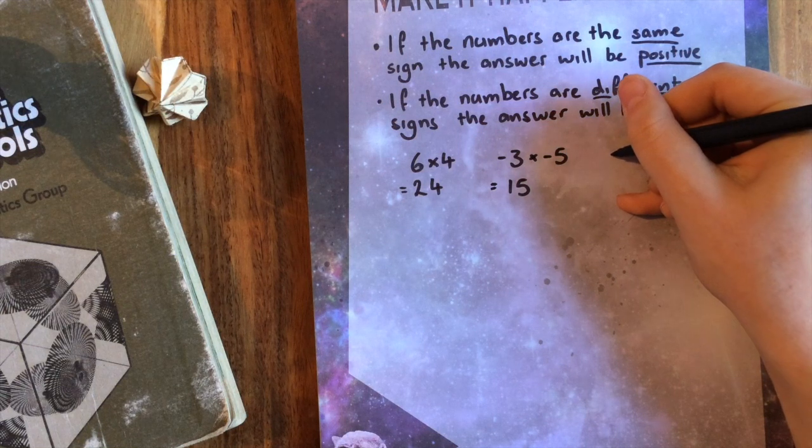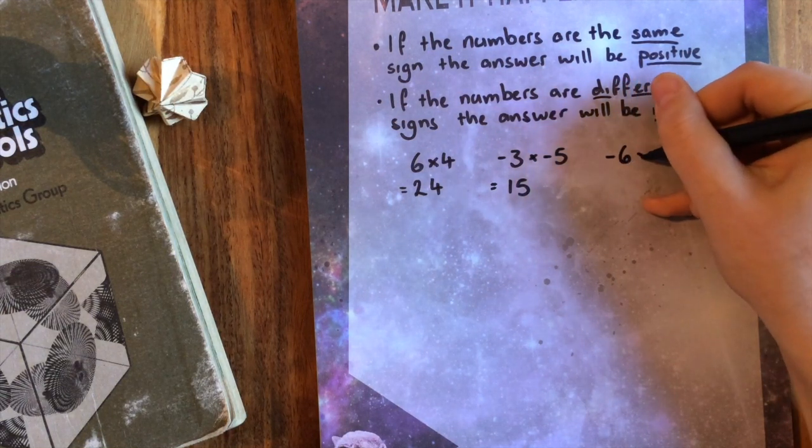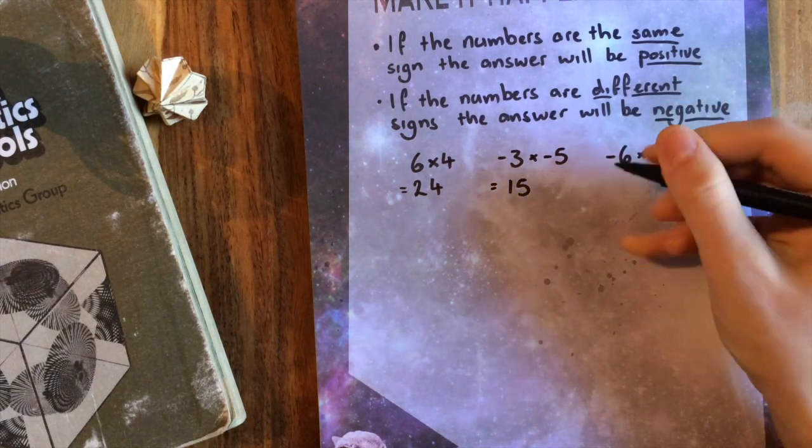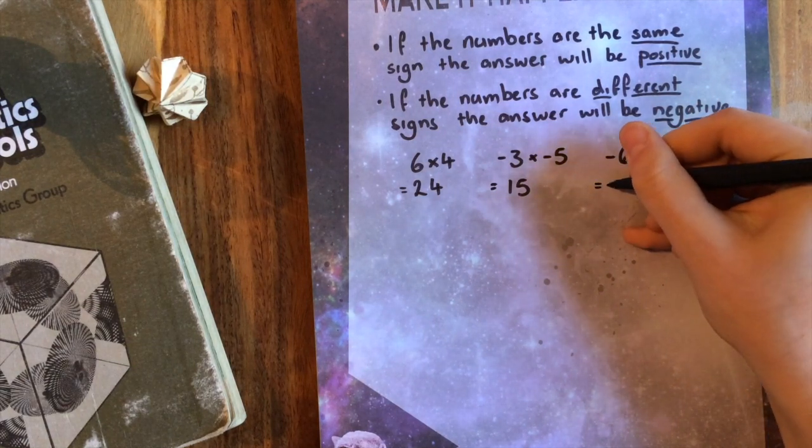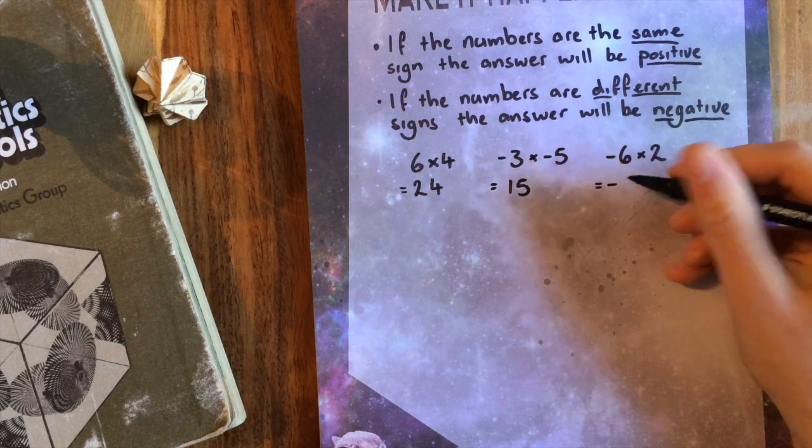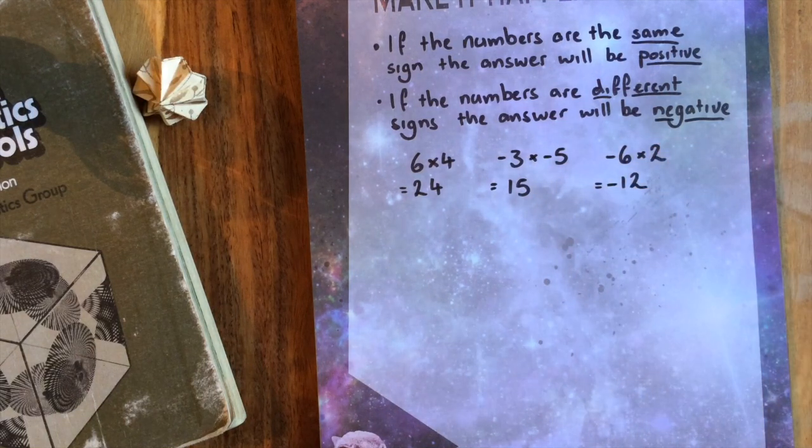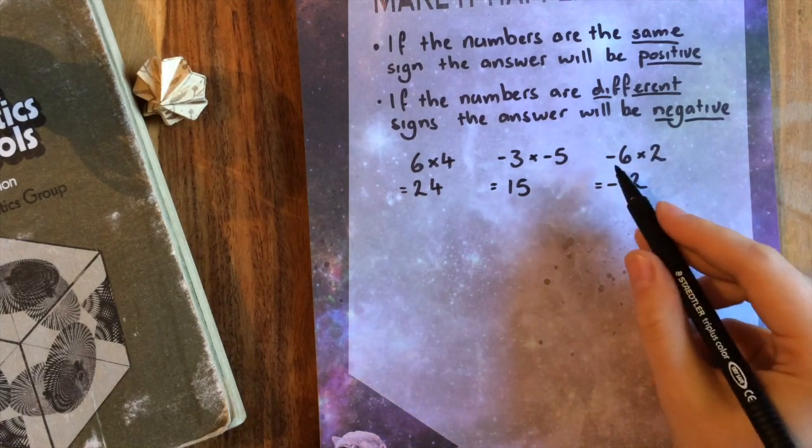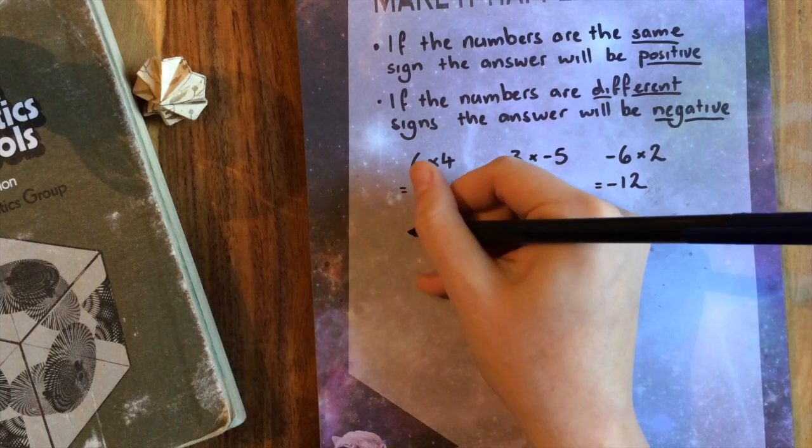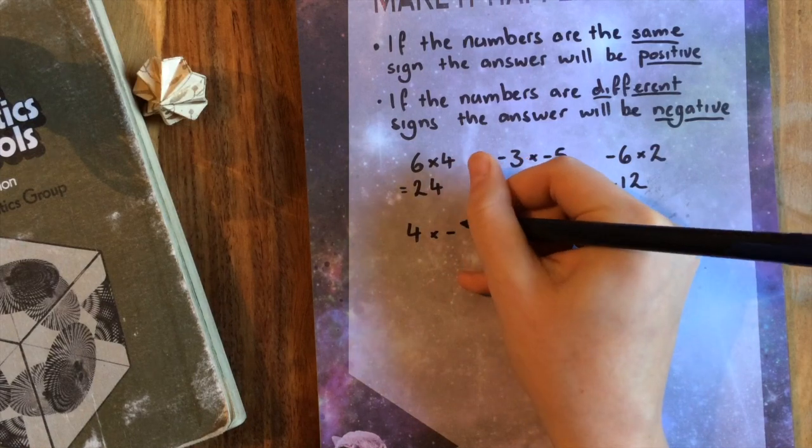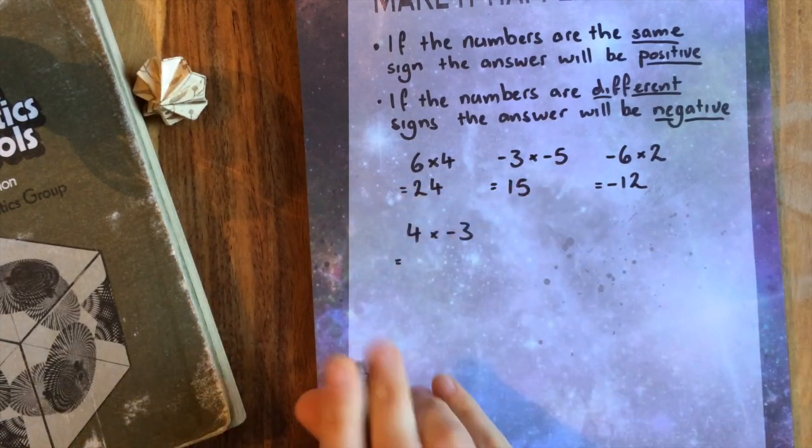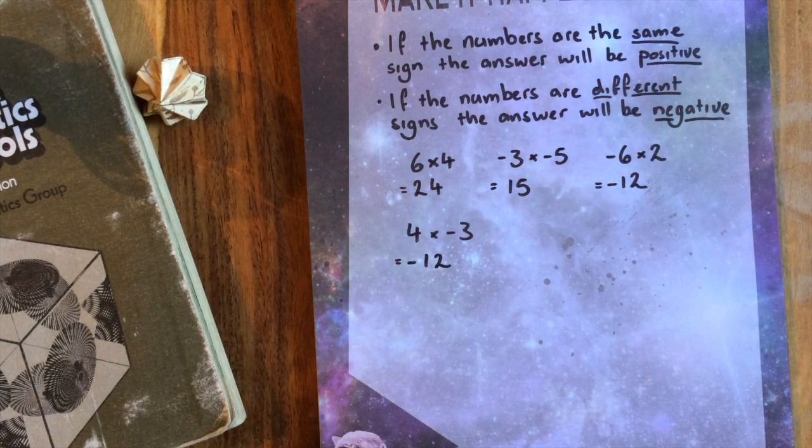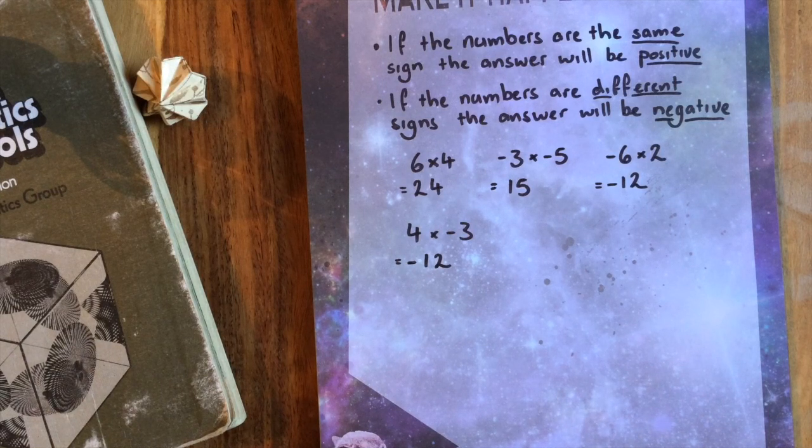If we have negative six times two, well, these numbers have different signs. So the answer, even before I know what it is, the answer will be negative 12. So same sign, positive answer, different sign, negative answer. And it also doesn't matter which number is negative. If I had four times negative three, then that's going to give me different signs. So the answer is still going to be negative, and it will be 12. So you can tell what the answer will be positive or negative, even before you know the number part.